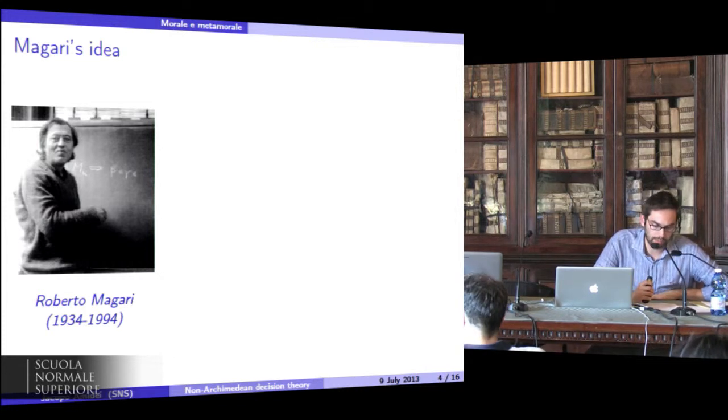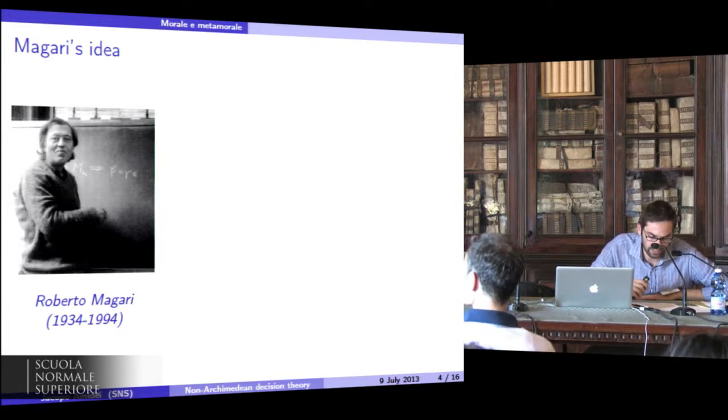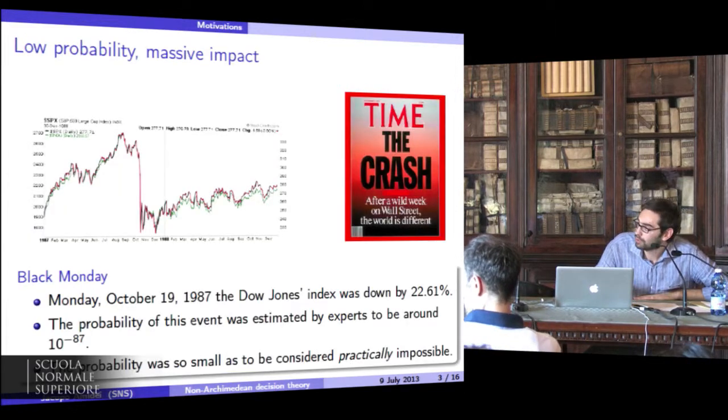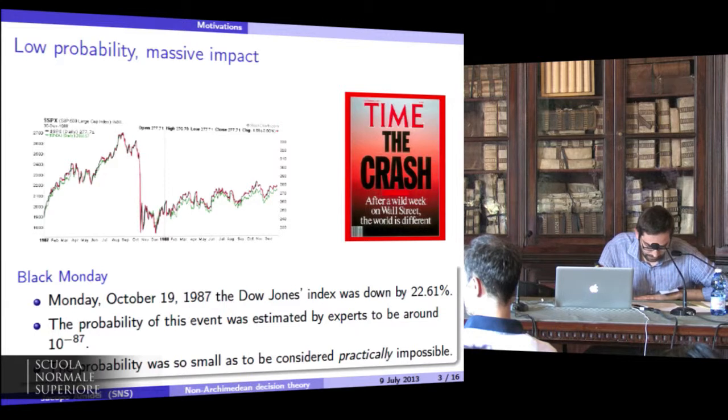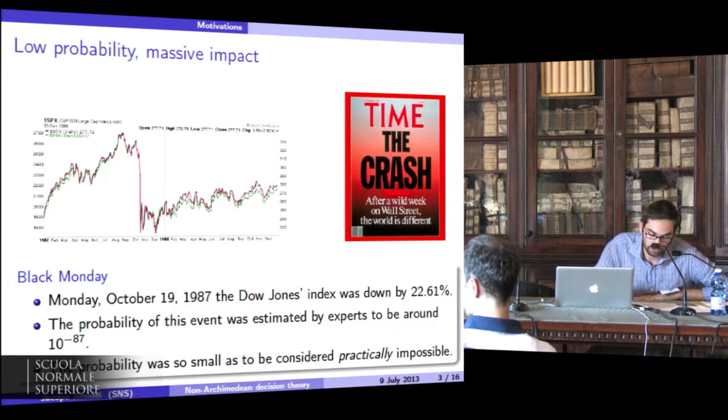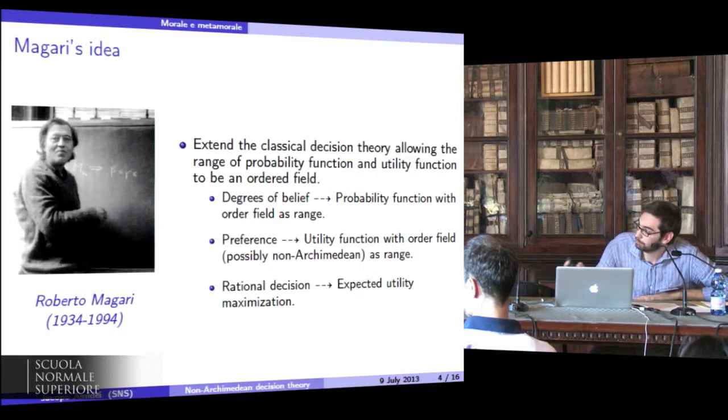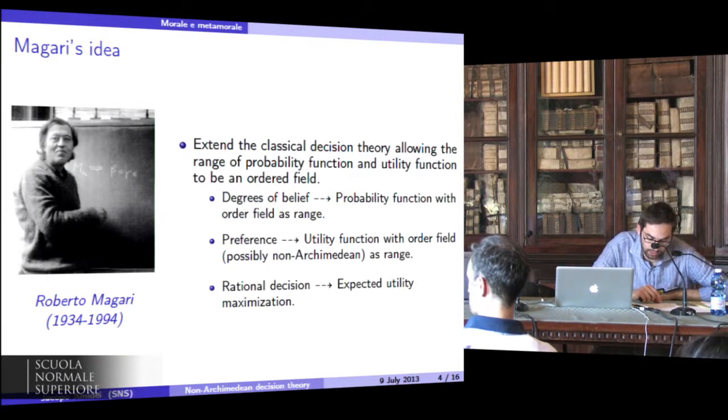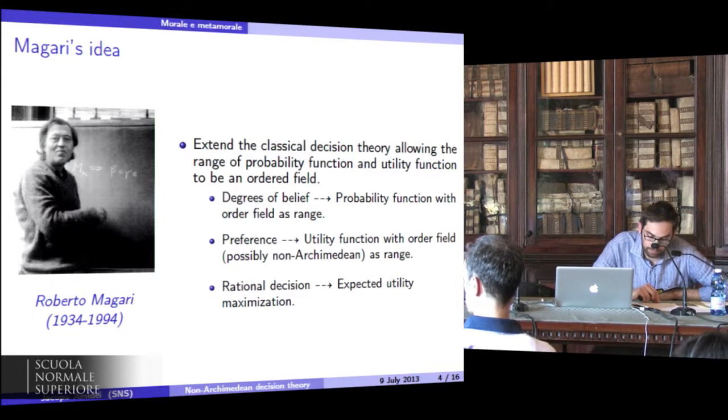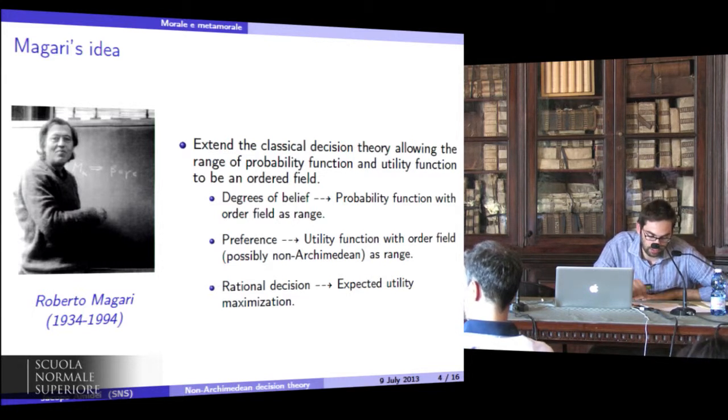The theory developed by Magari in the second chapter of this book is very interesting because his theory tried to solve the problem that we have just highlighted in classical decision theory, through the example of Black Monday. Magari's theory extends the classical decision theory by allowing the range of probability function and utility function to be an ordered field, possibly a non-Archimedean field.